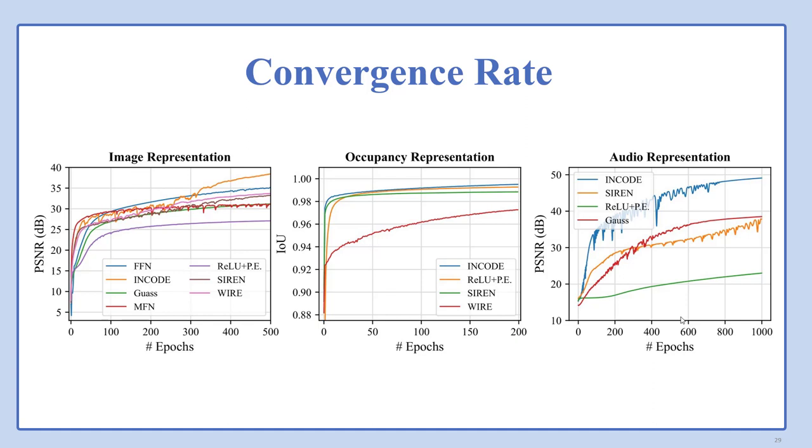Comparative analysis: You can see the convergence rate of ENCODE compared to other methods in audio, occupancy, and image representation tasks. As you can see, we have a much higher convergence rate than all other methods, and it shows that we can achieve higher quality with fewer epochs.